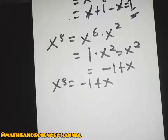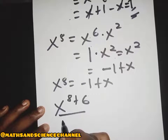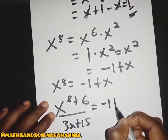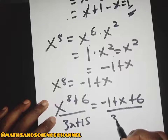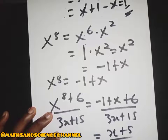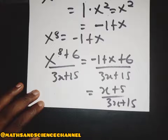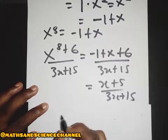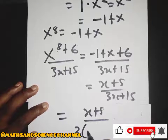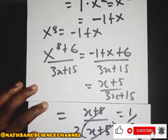Now, the question asks for s to the power of 8 plus 6 divided by 3s plus 15. Substituting, s to the power of 8 is negative 1 plus x, so the numerator becomes x minus 1 plus 6, which gives x plus 5. The denominator is 3s plus 15, which factors as 3 times s plus 5. So s plus 5 cancels from the numerator and denominator, giving us the answer 1 over 3.